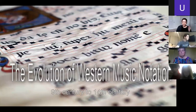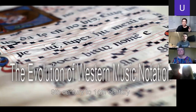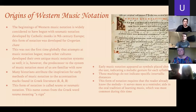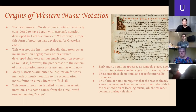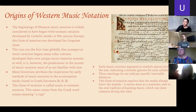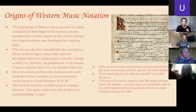Here's our slide about the origins of Western music notation, covering the period all the way from the 9th century up to around the 14th century. The beginnings of Western music notation are widely considered to have begun with neume notation, which was developed by Catholic monks in the 9th century in Europe.